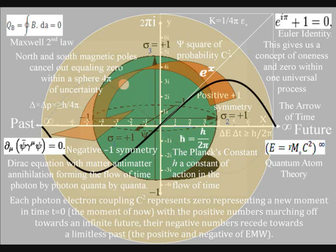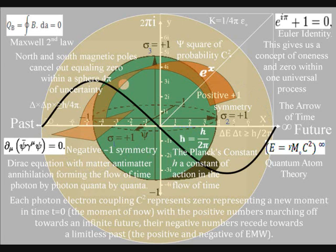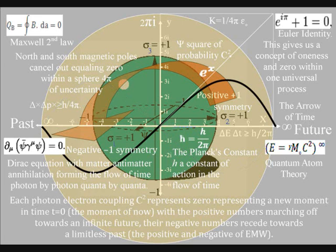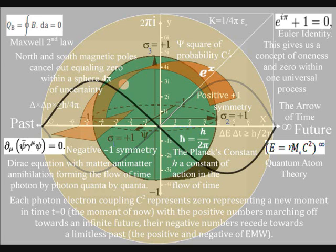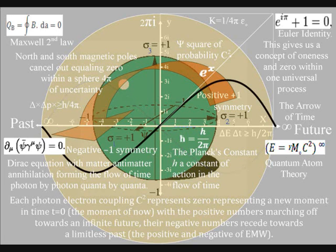In the top left-hand corner, we have Maxwell's second law, with north and south magnetic poles cancelling out equaling zero, within a sphere of uncertainty. This forms the continuous flow of electric charge with the movement of electromagnetic fields.